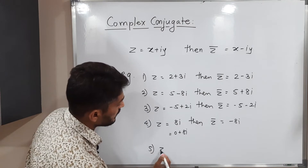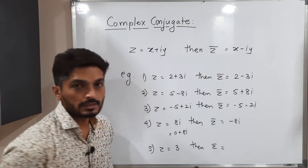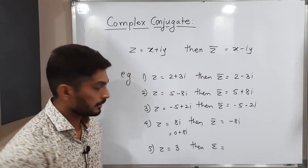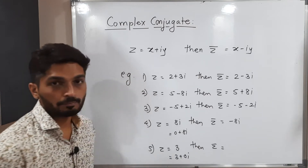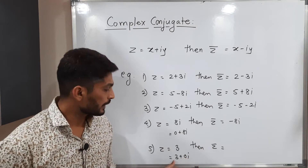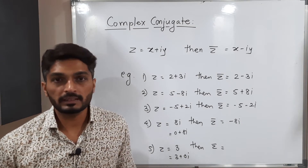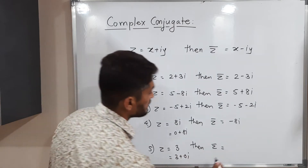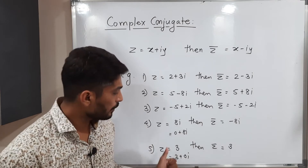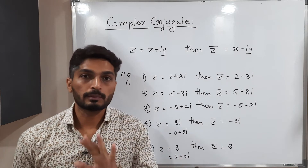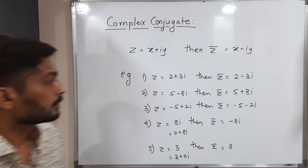Next, if z is equal to 3, then z-bar equals — keep in mind that 3 means 3 plus 0i, so the imaginary part is 0. When we take the complex conjugate we write 3 minus 0i, but subtracting zero leaves the value unchanged. So z-bar is equal to 3. This is an important result: when you have a real number only, its complex conjugate is the same.